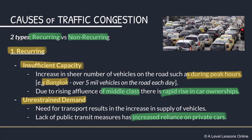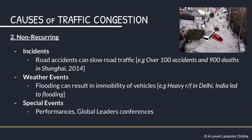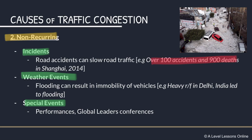Non-recurring congestion, as the name suggests, doesn't happen as often. It tends to involve incidents, weather events, or special events. Incidents refer to traffic accidents — for example, in Shanghai in 2014 there were over 100 accidents and 900 deaths in just one year. Weather events can include heavy flooding, such as during monsoon season in Delhi, which is also a synoptic link where the southwest or northeast monsoon can affect traffic due to increased flooding.